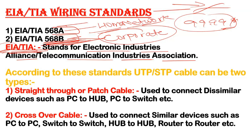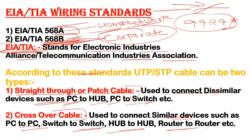According to these standards, twisted pair cables can be two types. Number one is straight-through, also known as a patch cable, used to connect dissimilar devices — such as PC to hub, PC to switch, or switch to router. Crossover cables are used to connect similar devices, such as PC to PC, switch to switch, hub to hub, or router to router.